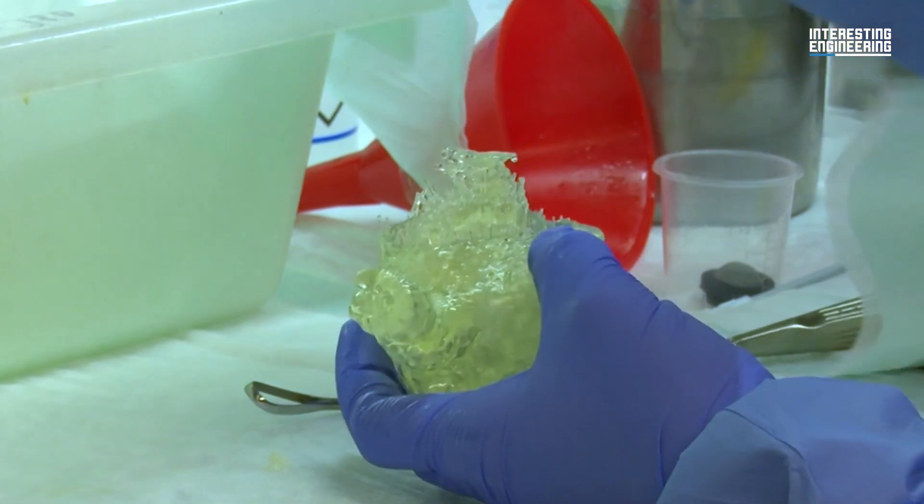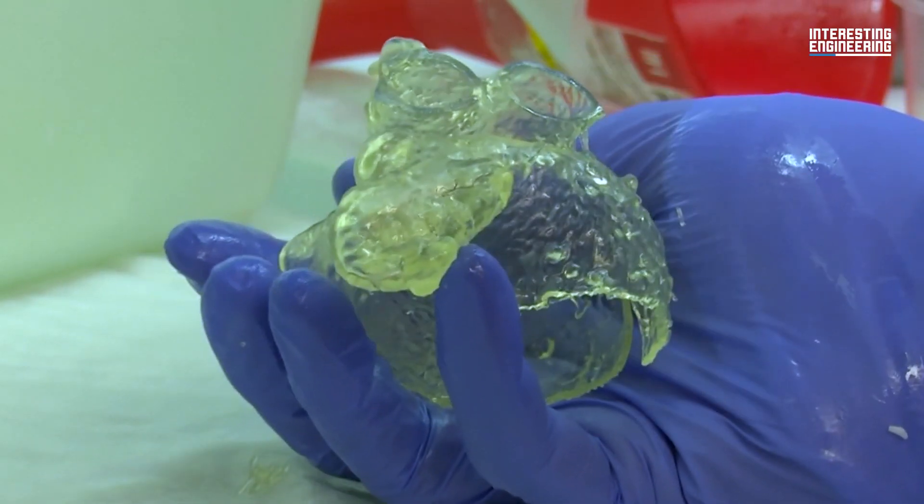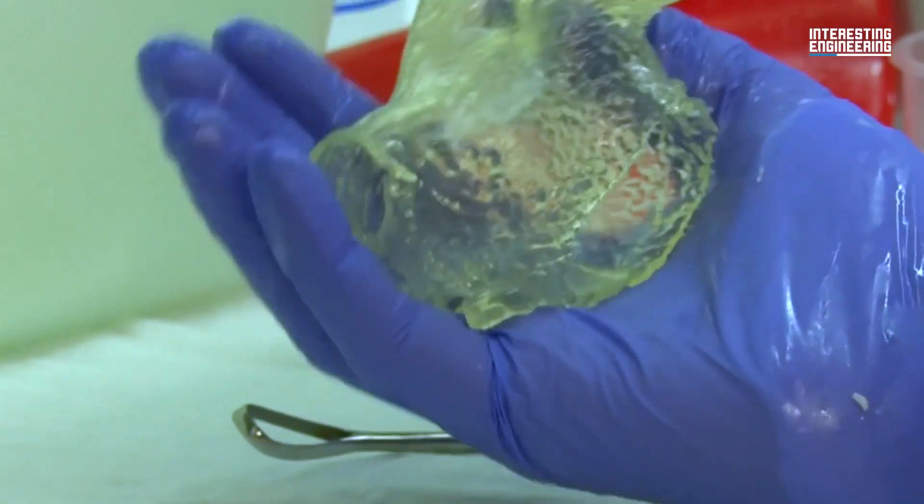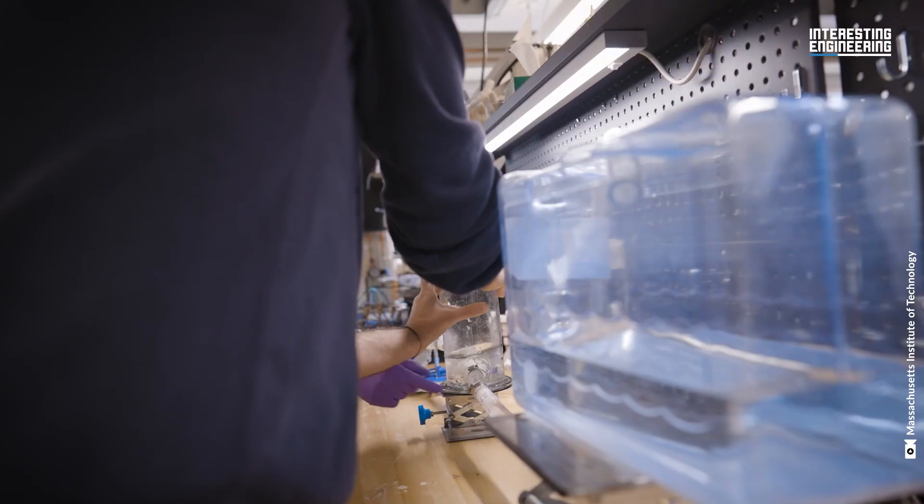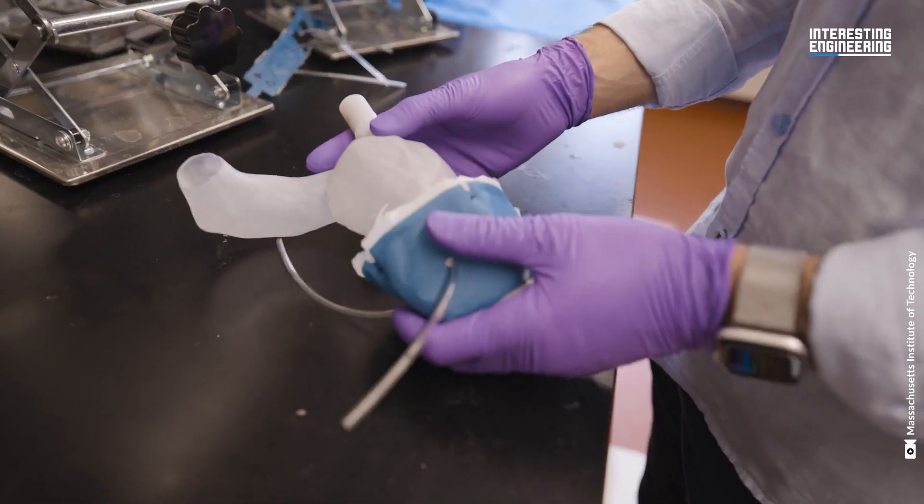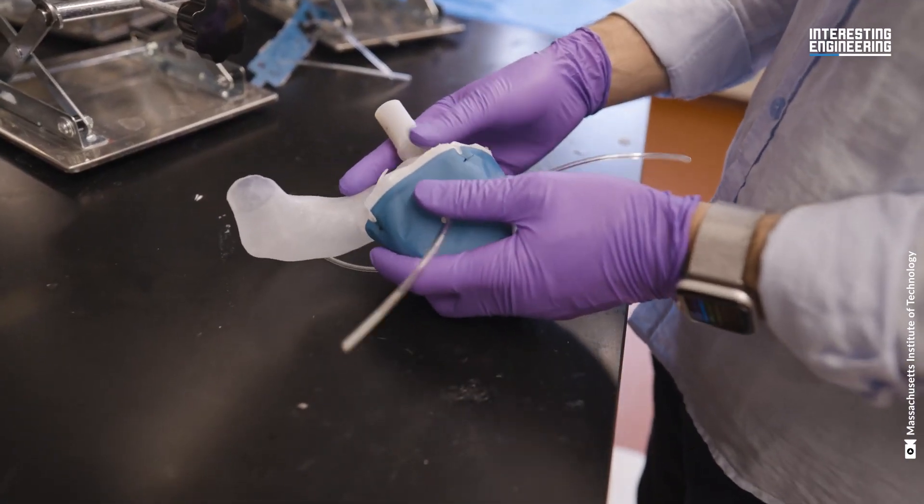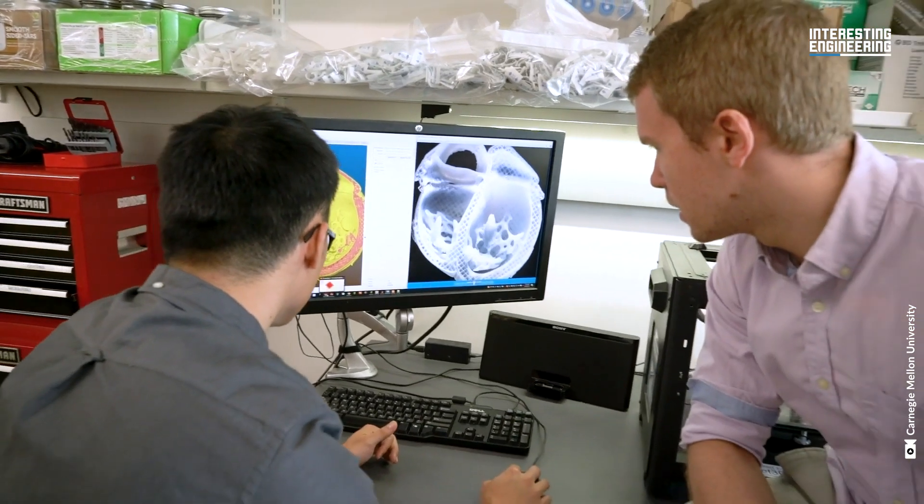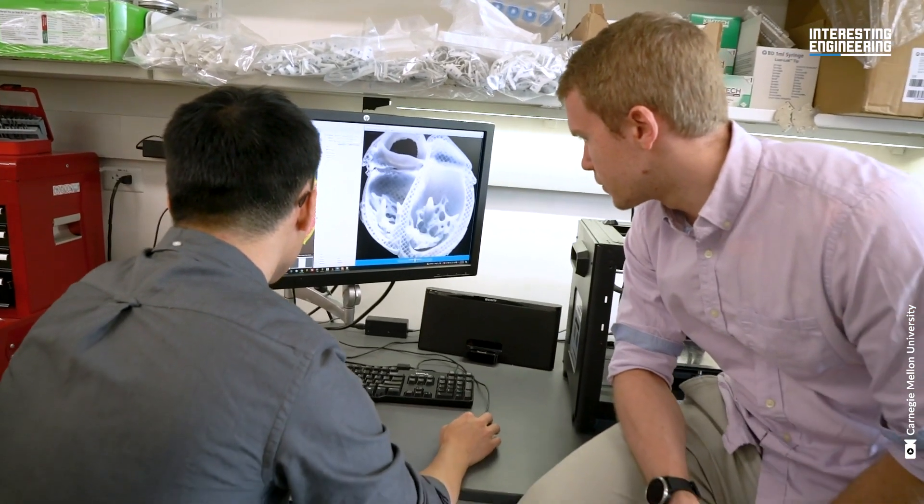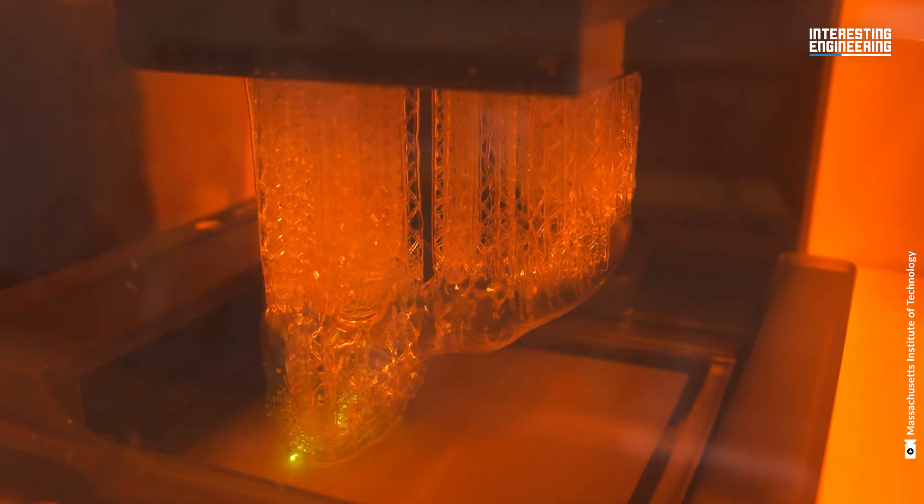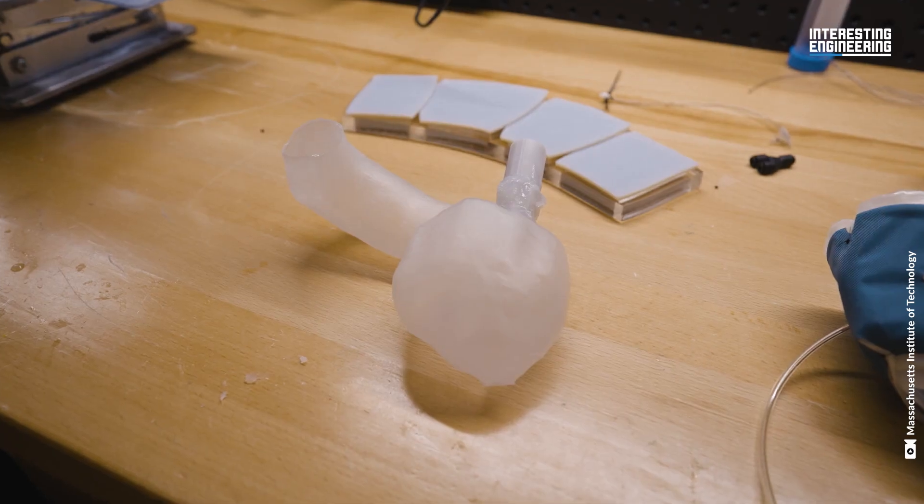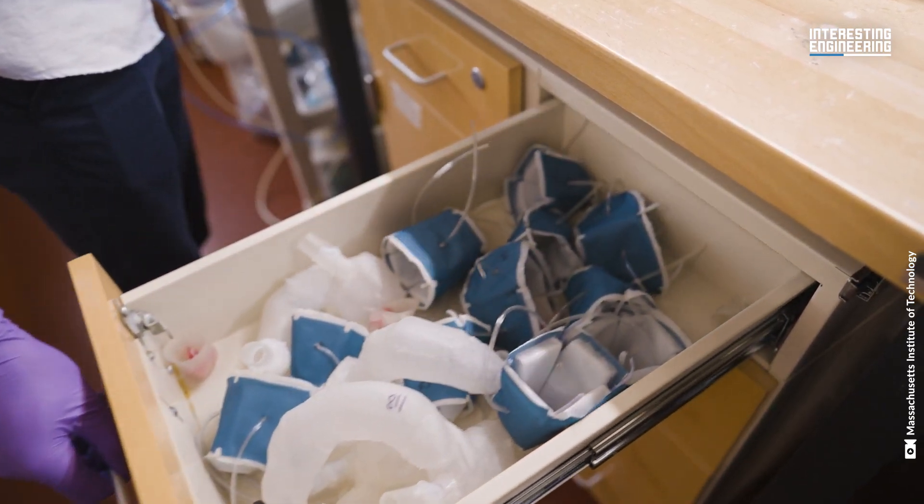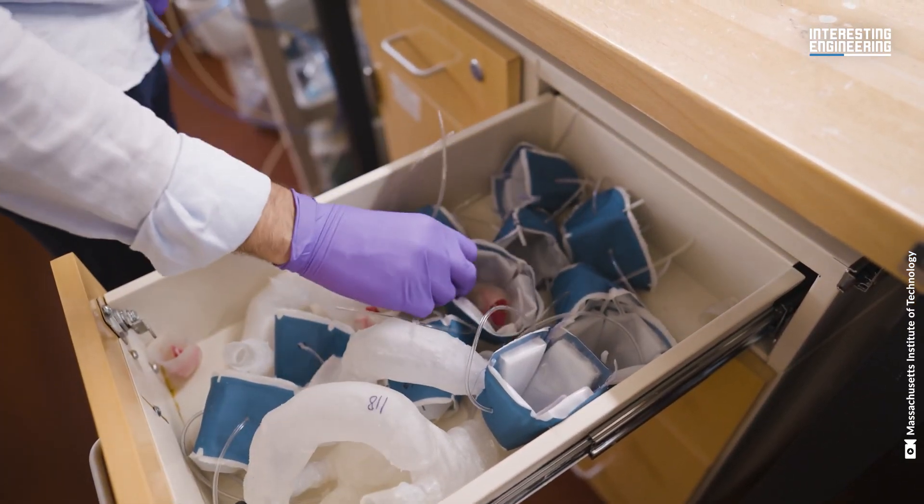But standard models often fall short in replicating the intricacies of a specific patient's heart. Recognizing this gap, MIT engineers embarked on a mission to create patient-specific heart replicas. The process begins with detailed medical imaging of an individual's heart. These images are then transformed into a 3D computer model. Using a specialized polymer-based ink, a 3D printer produces a soft, flexible shell that mirrors the exact shape of the patient's heart. But the innovation doesn't stop there.